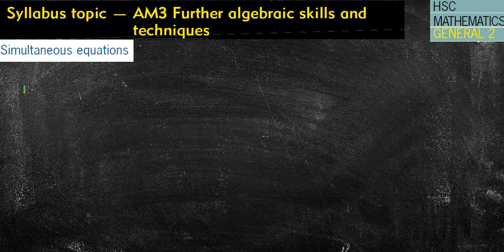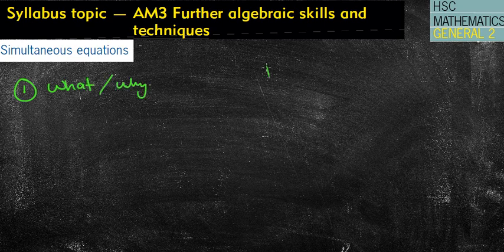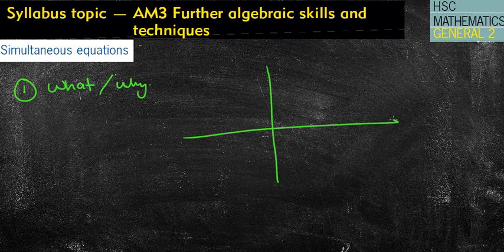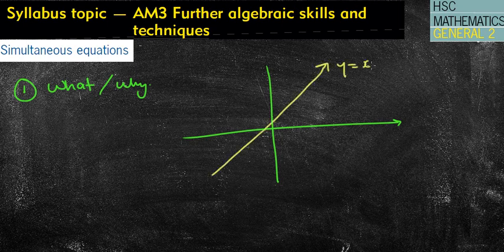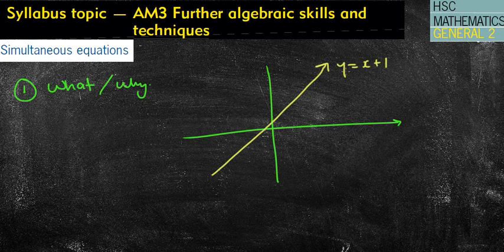I'm just going to go through basic understanding number one of what is it. So you would have learned a little while ago how to draw graphs, probably about year 7, year 8, and you might have sketched the graph of y equals x. Well, let's call that y equals x plus 1. And then you might have been asked to draw two graphs, let's say y equals x plus 1, and the graph of y equals negative x plus 1, for example.